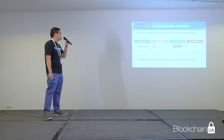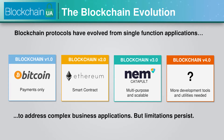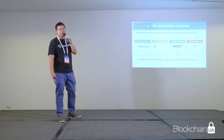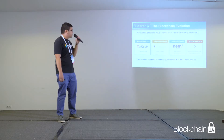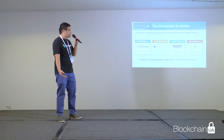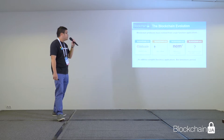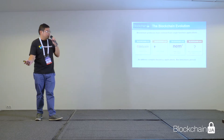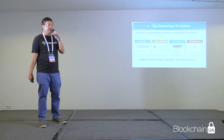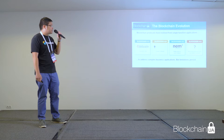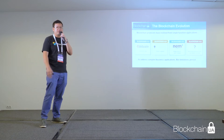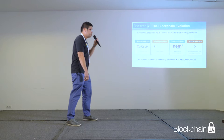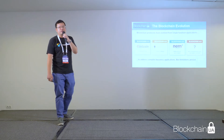Now let's go a bit further into the blockchain evolution. Blockchain 1.0, which is Bitcoin, is mainly used for payments only. When Ethereum introduced smart contracts, there came blockchain 2.0. And blockchain 3.0 introduces cross-chain interoperability and multipurpose smart contracts, and is more scalable. What is expected for the next generation blockchain from the industry?